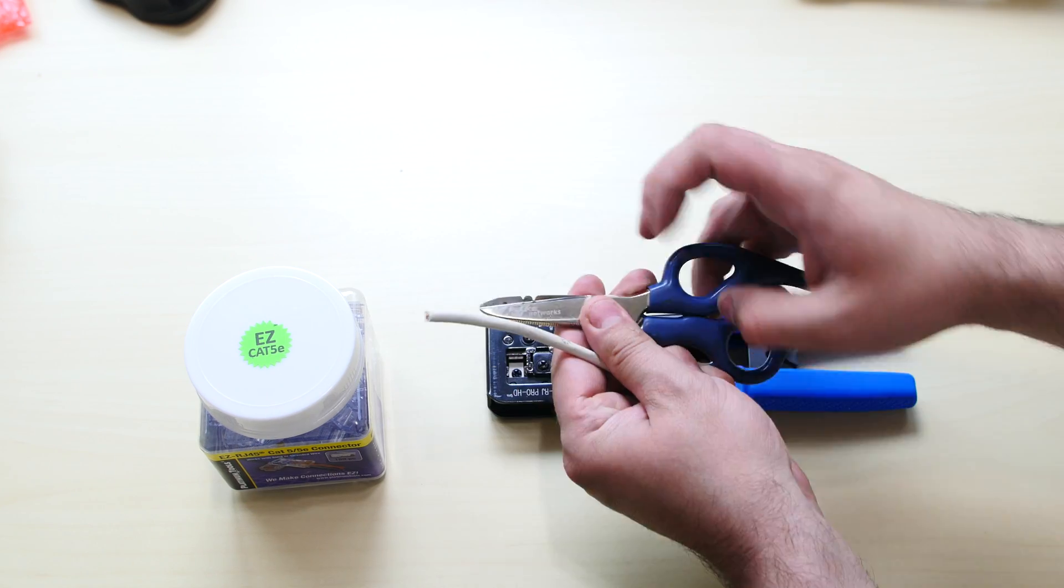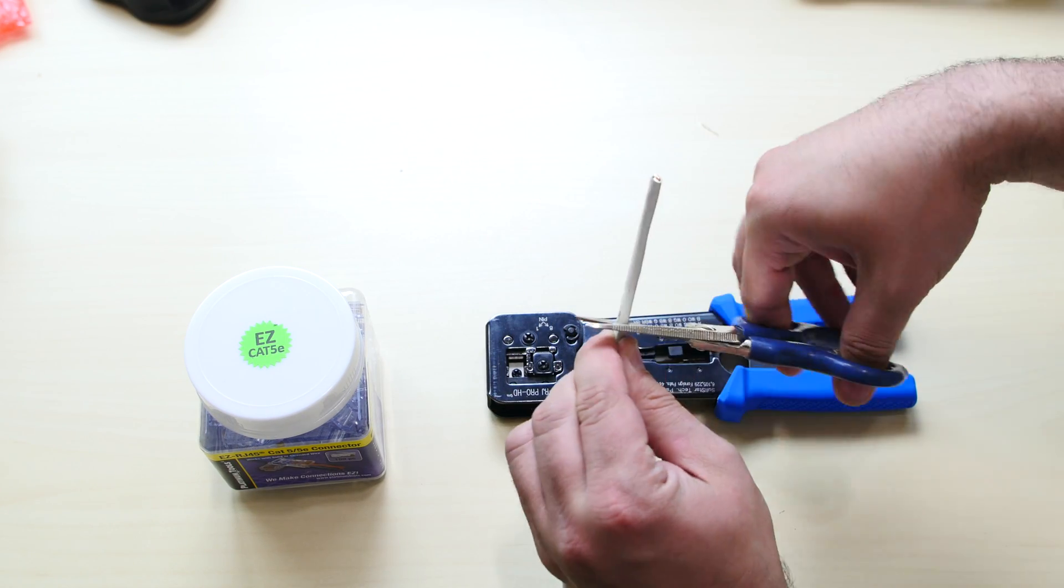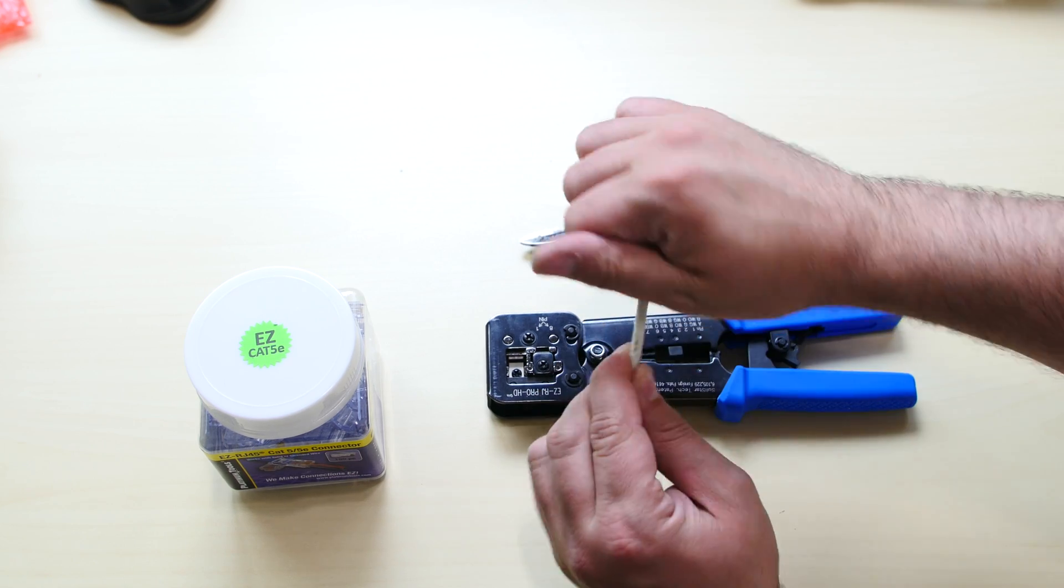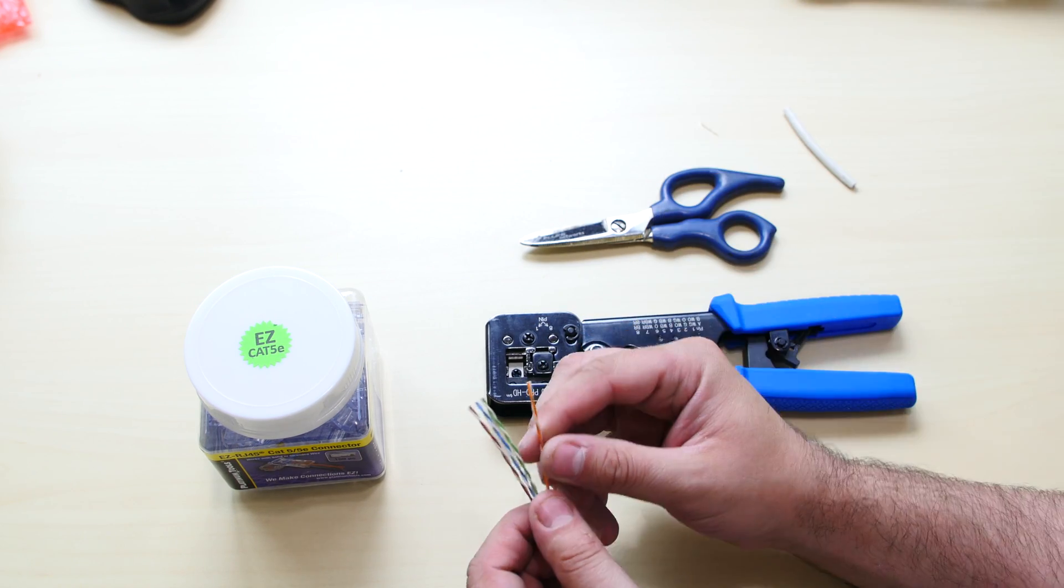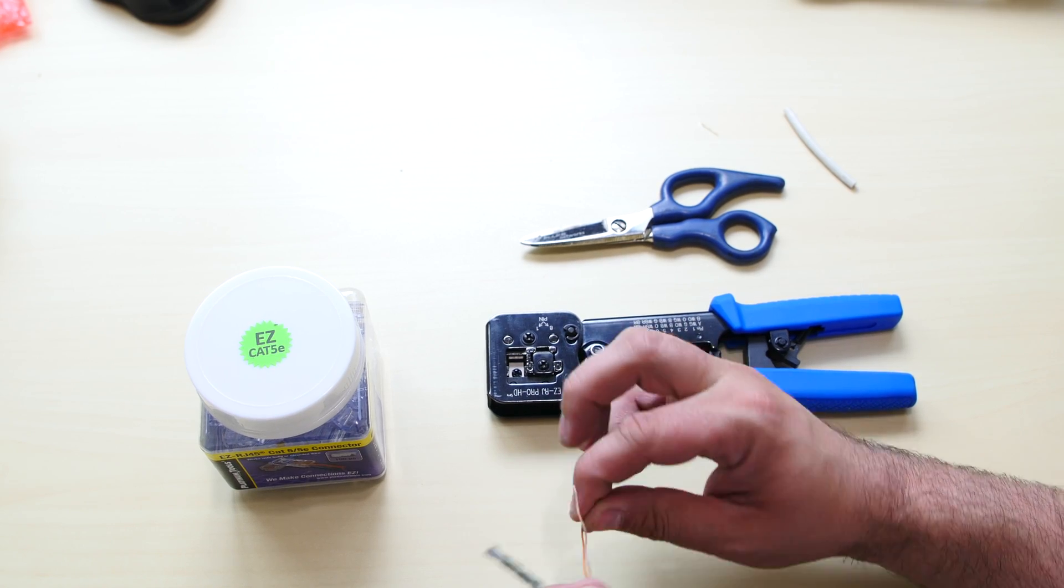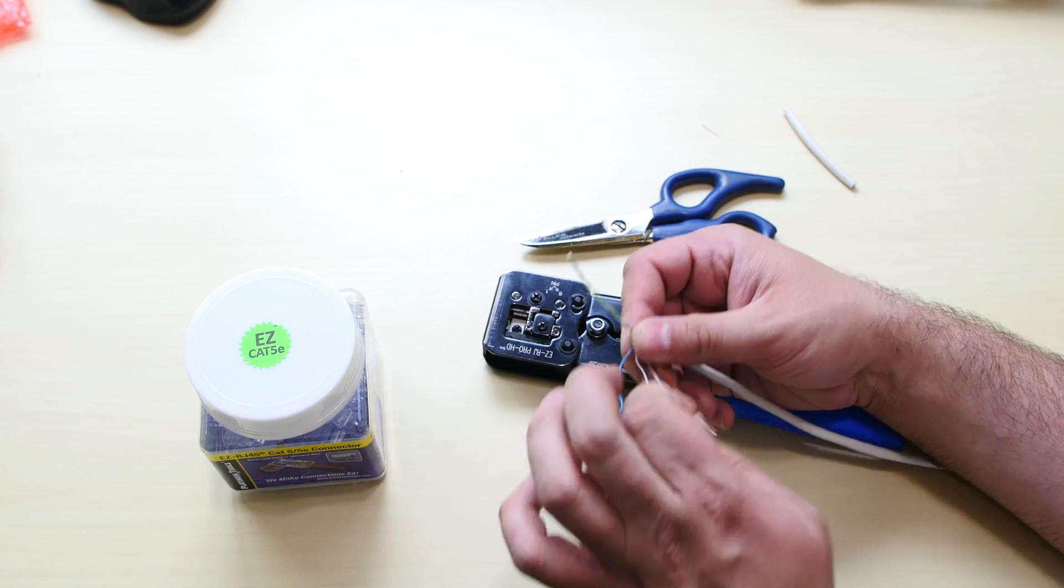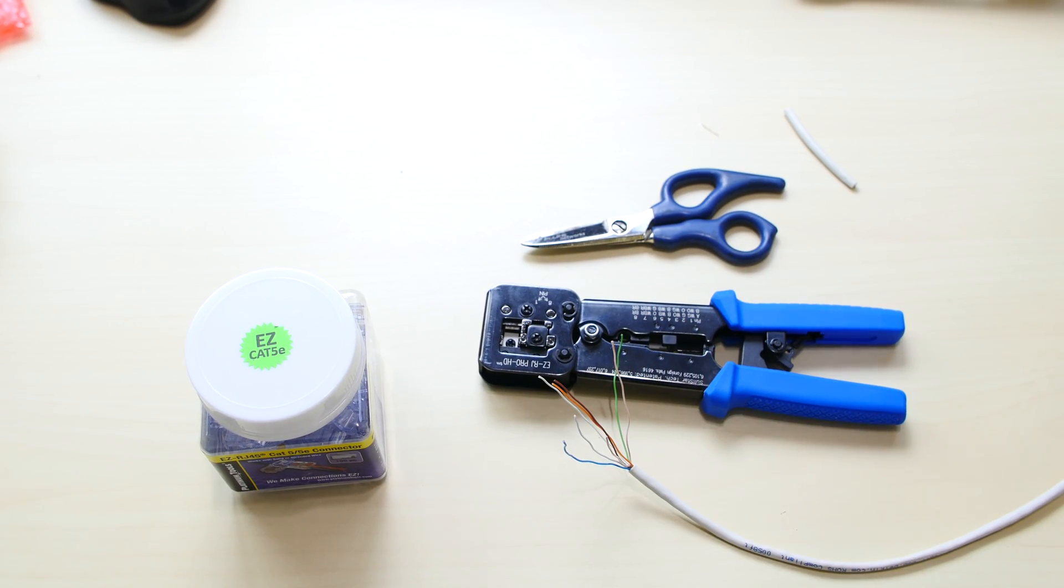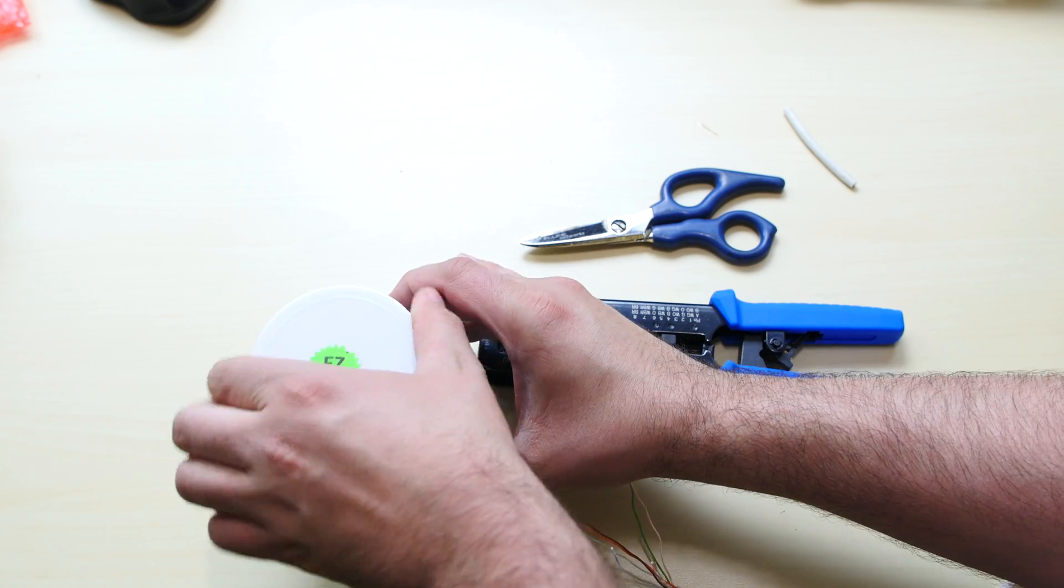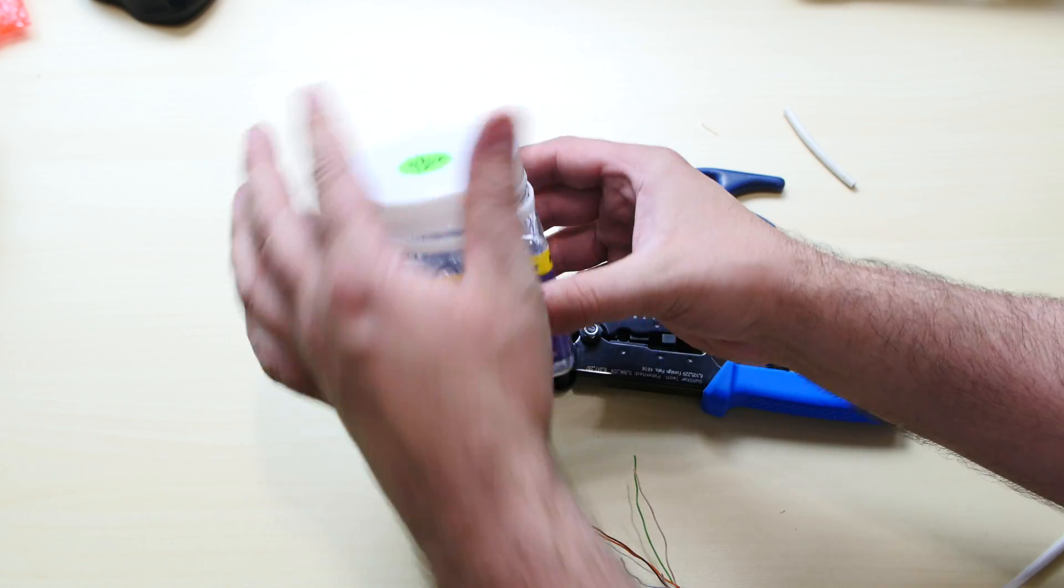So I'm just going to cut off some of the shield right here. And by the way, you could cut off a lot because this tool is going to do trimming for you. You don't have to trim the cable. All you have to do is pair it, make it the right pair. So what I'm going to do is I'm going to unwind this here. I'm going to unwind this here.